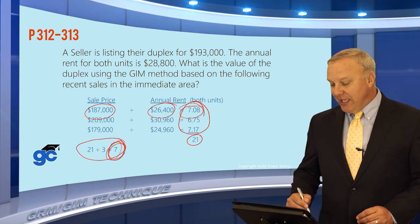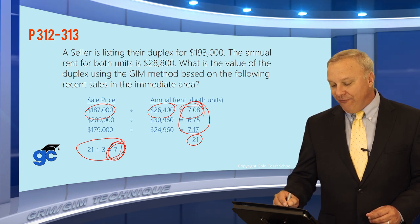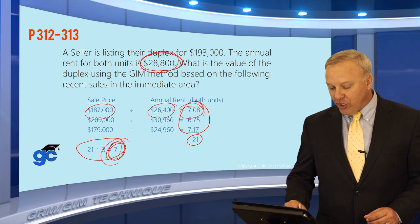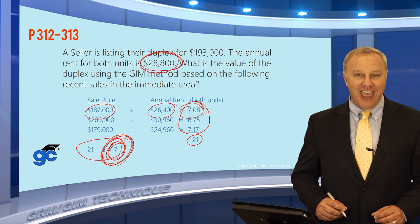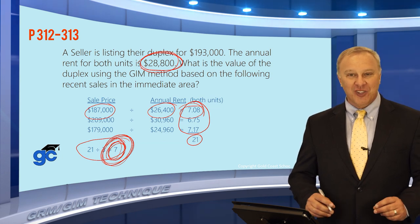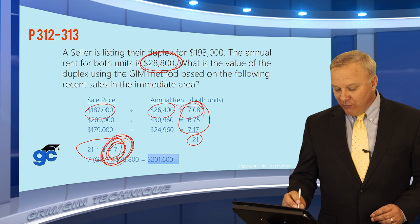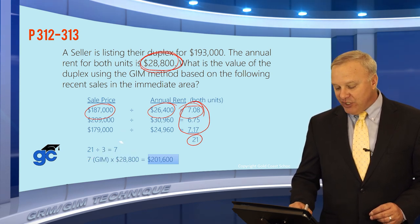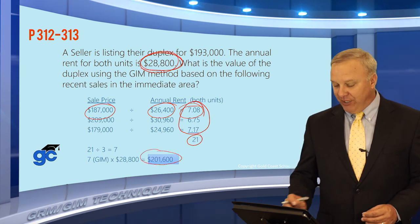The question is: what is the value of the duplex? The rent for the duplex is $28,800 and the multiplier occurring in the area is 7. If we simply multiply those two numbers together, we get a good estimate of what the property should sell for. The GIM of 7 times $28,800 equals $201,600 as an estimate of the value of that property.